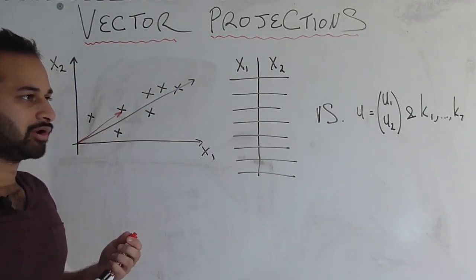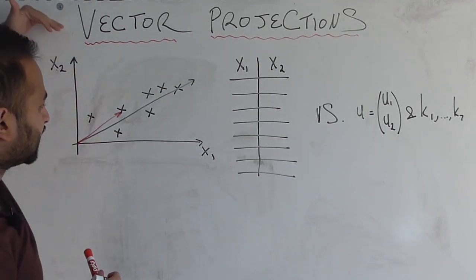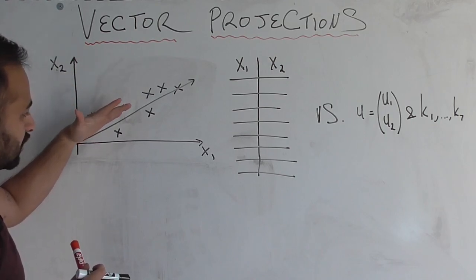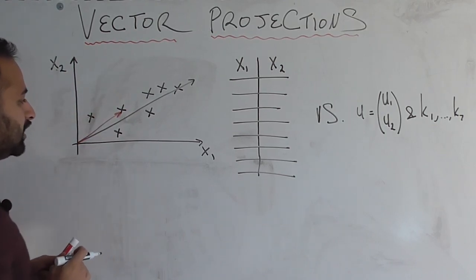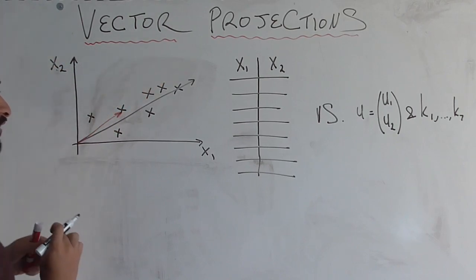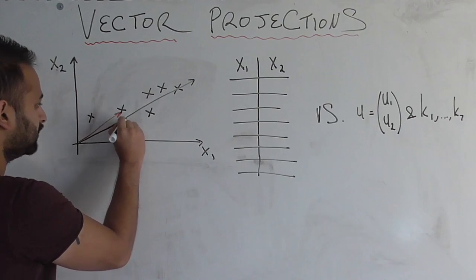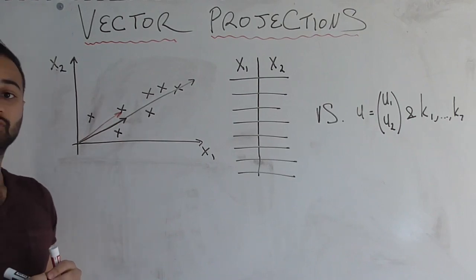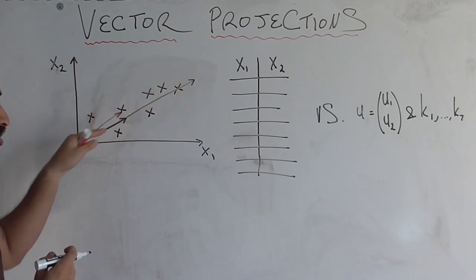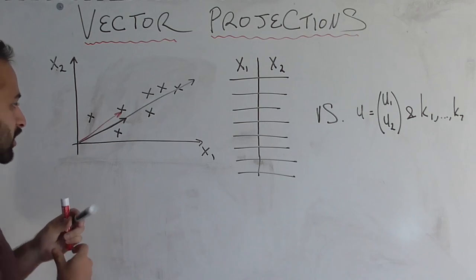Without even knowing what a projection is, I think a lot of people would find it clear that if we imagine a light source coming from a perpendicular direction, what does the shadow of that red vector look like on this black vector? You're taking this red vector and projecting it onto that black vector. The answer is that it looks like this — it's going in the same direction as the original black vector, it just has a shorter magnitude.